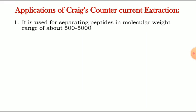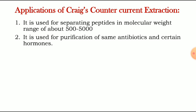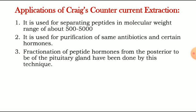The applications of Craig's counter current extraction: first, it is used for separating peptides in the molecular weight range of about 500 to 5000. Second, it is used for purification of some antibiotics and certain hormones. Third, fractionation of peptides and hormones from the posterior lobe of the pituitary gland has been done by this technique.